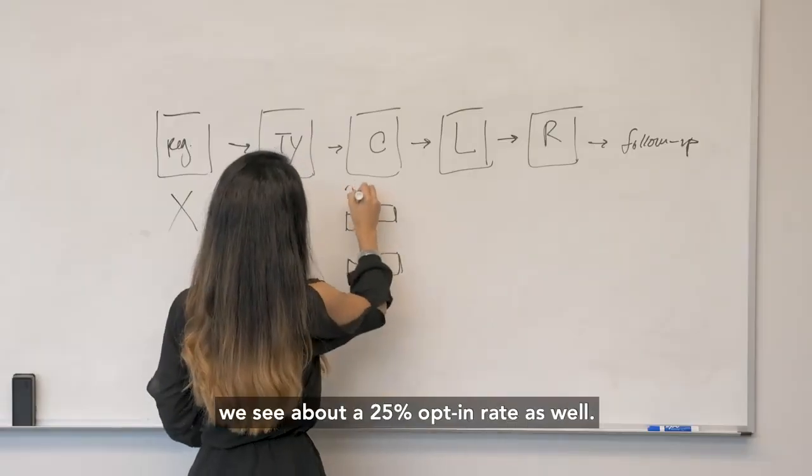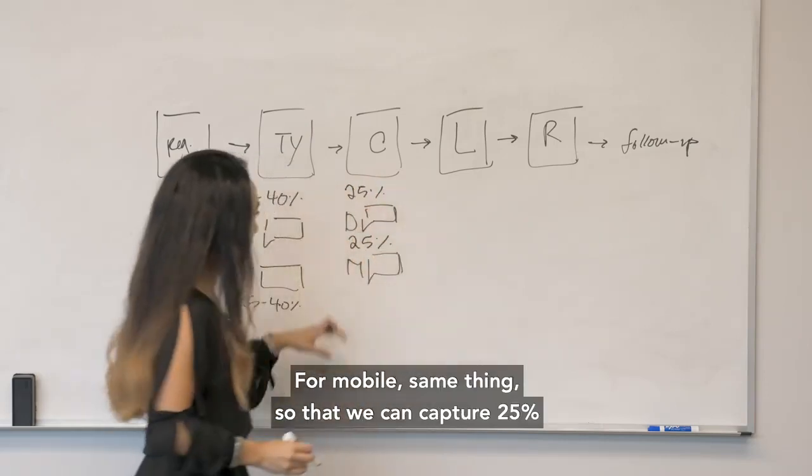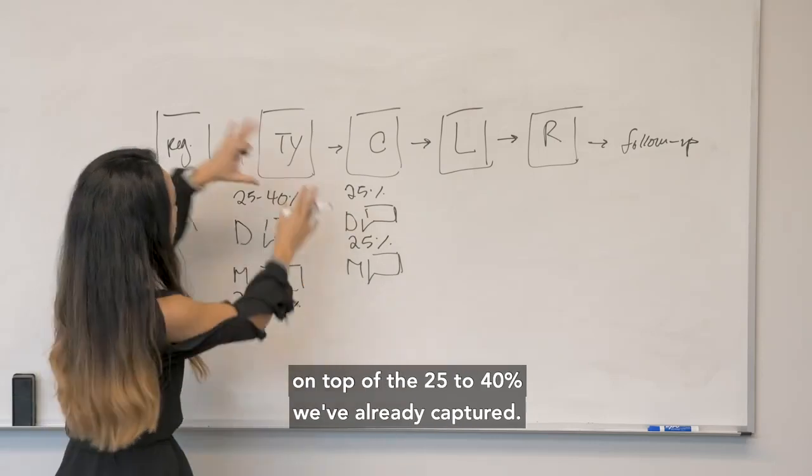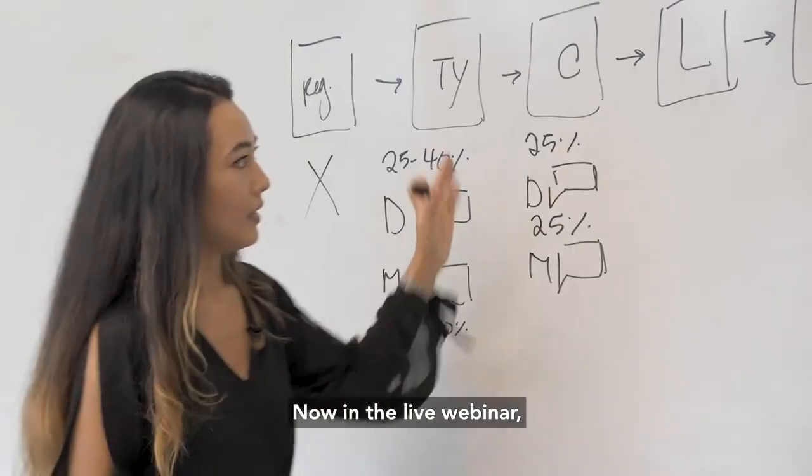And for this, typically, we see about a 25% opt-in rate as well. For mobile, same thing, so that we can capture 25% on top of the 25% to 40% we've already captured.